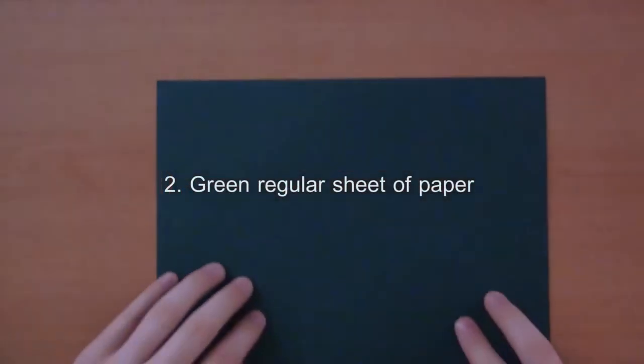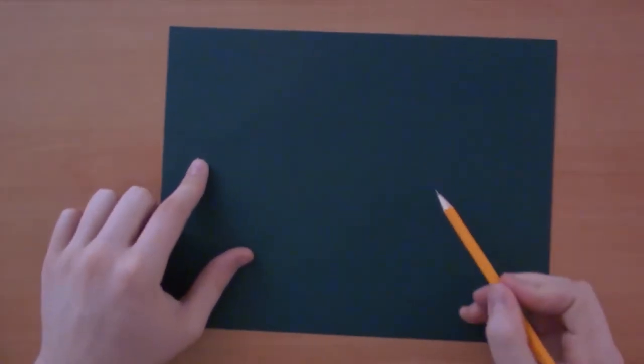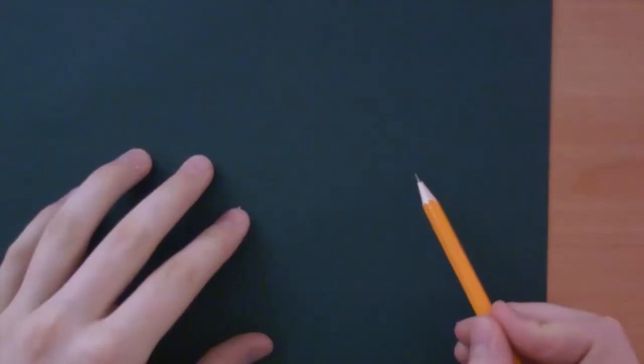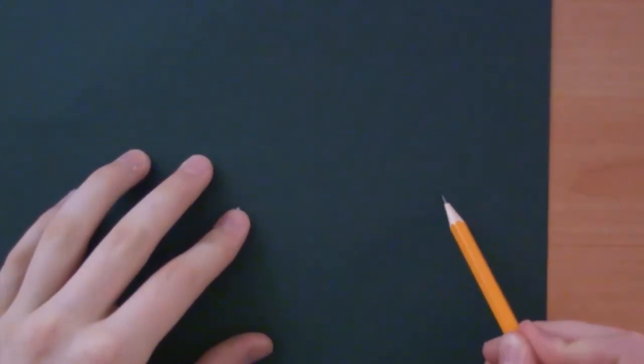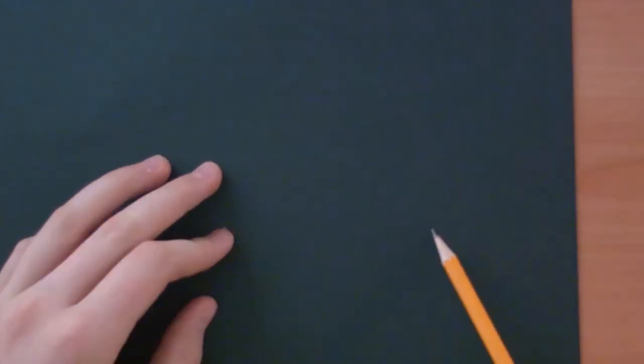Once you have those complete, grab your regular green sheet of paper along with the pencil. You're gonna use the pencil to draw three circles that are approximately the size of the base of your roses. This is important to make this as accurate as possible but at the same time don't be too picky because that's when things get a little messy.